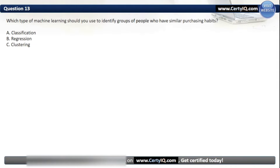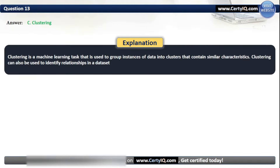Question 13. Which type of machine learning should you use to identify groups of people who have similar purchasing habits? Options: A. Classification, B. Regression, or C. Clustering. Here we are talking about groups, so the correct answer is C. Clustering. Clustering is a machine learning task used to group instances of data into clusters that contain similar characteristics. Clustering can also be used to identify relationships in a dataset.